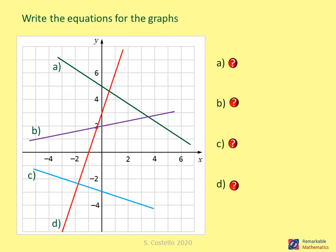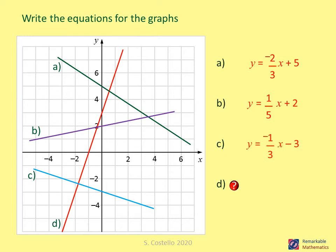Pause the video, work out the equations of the lines shown, then play the video again to check. The answers: A is y equals minus two over three x plus five; B is y equals one over five x plus two; C is y equals minus one over three x minus three; and D is y equals 3x plus four.